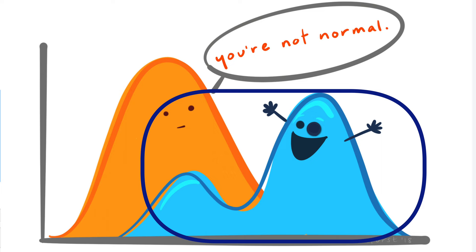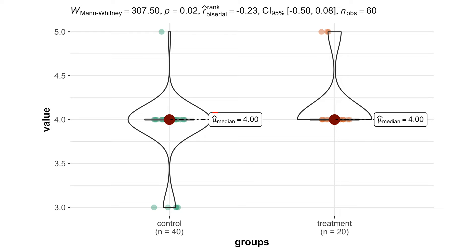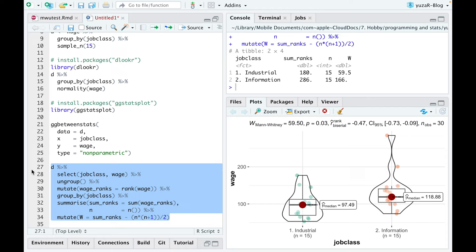And that is why it can easily happen that medians are identical, especially with ordinal data, while samples are still significantly different. I freaked out the first time I saw it, so I hope you will not.